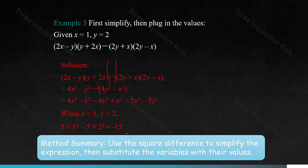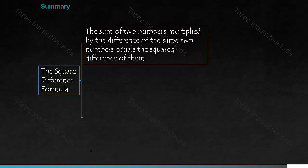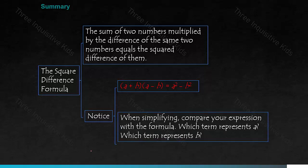Class summary: today we learned about the square difference formula. The sum of two numbers multiplied by the difference of the same two numbers equals the squared difference of them. Remember the formula: a plus b times a minus b equals a squared minus b squared. When simplifying, compare your given expression to the formula and ask yourself which term represents a and which represents b, because some problems try to confuse you by swapping the order of terms or changing addition to subtraction. I hope you learned something from this video — see you in the next lesson on the perfect square formula.